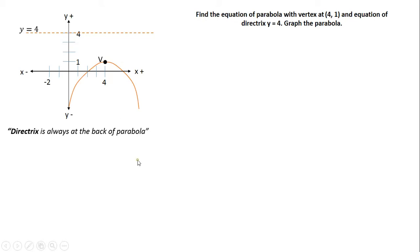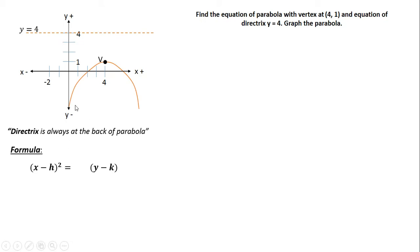Our parabola passes through 2 points on the x-axis, so we use the x-squared formula. Since it opens downward, or opens to the negative y direction, 4p is negative. So the formula we're going to use is (x minus h)² = negative 4p times (y minus k).